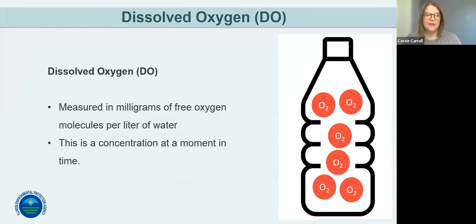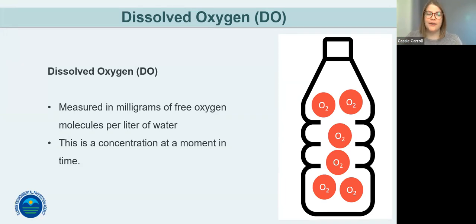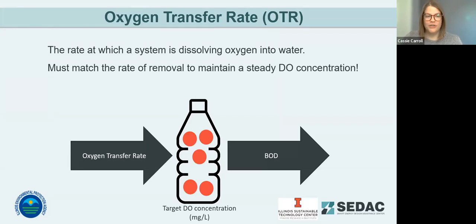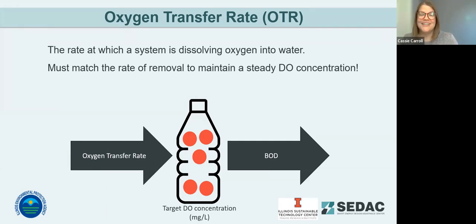To understand how much oxygen is needed, we take the concentration of BOD, apply the amount of flow, and convert that to pounds of material, which allows us to estimate how much oxygen is needed to treat that demand. DO is measured in milligrams of free oxygen molecules per liter of water. It's a concentration at a moment in time, which is important to keep in mind because it doesn't predict future levels. In lagoon treatment, too little DO results in incomplete nutrient removal and non-compliance. Oxygen transfer rate is the rate at which a system is dissolving oxygen into water.